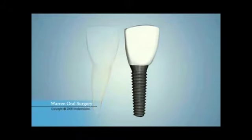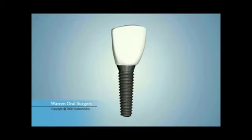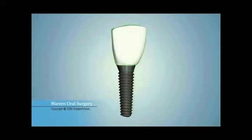A dental implant treatment may involve several pieces. However, it may also be described as having two main parts. One part is a restoration that is custom fabricated to match the shape of a natural tooth crown. The second part is the implant that replaces the function of a natural tooth root.